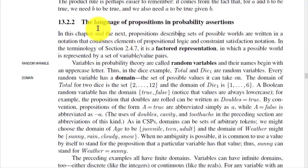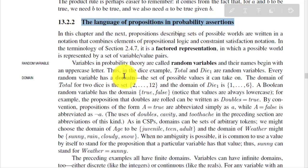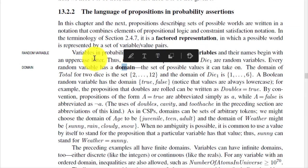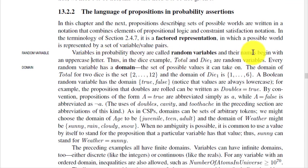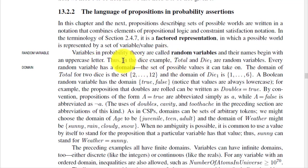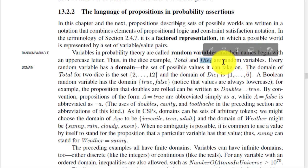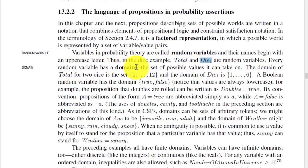The next point is the language of propositions in probability assertions. Variables in probability theory are called random variables and their names begin with uppercase letters. In the dice example, Total and Die1 are random variables. Every random variable has a domain.